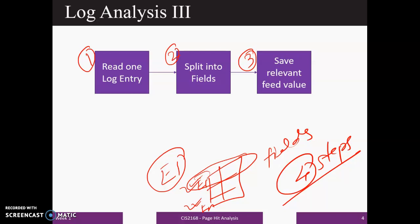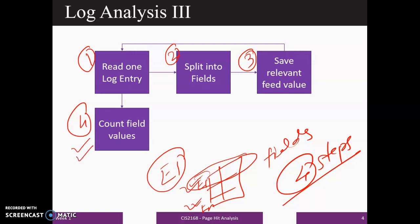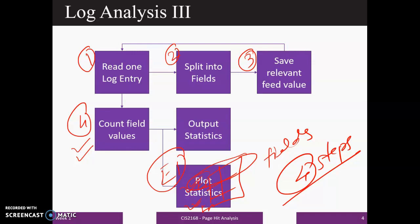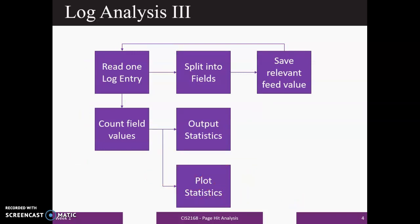And a log file may contain multiple entries. So to read all the entries given in the log file, we will repeat this process for all the entries. Once we will read all the entries, then the next step is count the field values of the log file. After completing step number 4, we will be in a position to generate the output statistics. And we can use the count values to create the plots. You can create any type of plot like histogram or box plot or any other plot you can create.